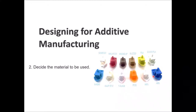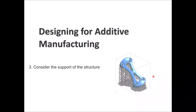Thirdly, while doing the design in that specific printing methodology you chose, you need to consider that in most cases you need some support for the structure you are trying to print. There are some 3D CAD softwares that support 3D printing — some of them generate automatically the 3D support for your part based on the orientation and nature of your part. Sometimes you need to design these supporting materials yourself, or use a third-party software. In some cases the supporting material is different than the main part material.